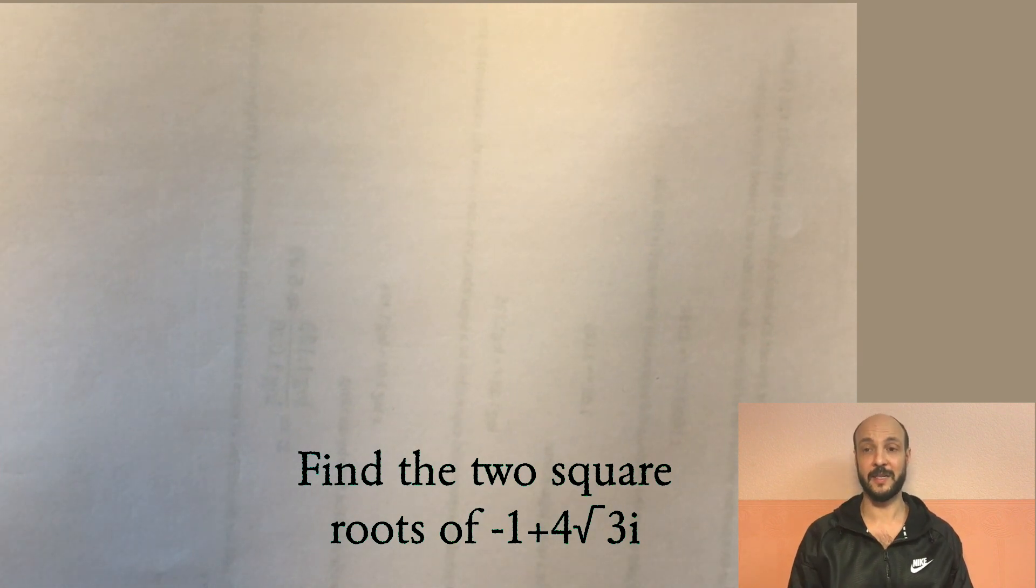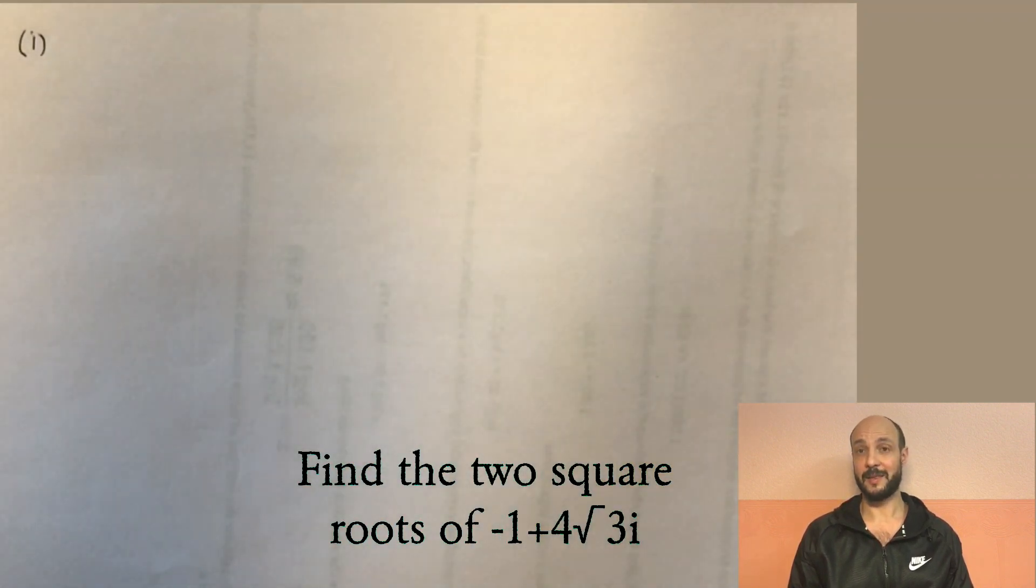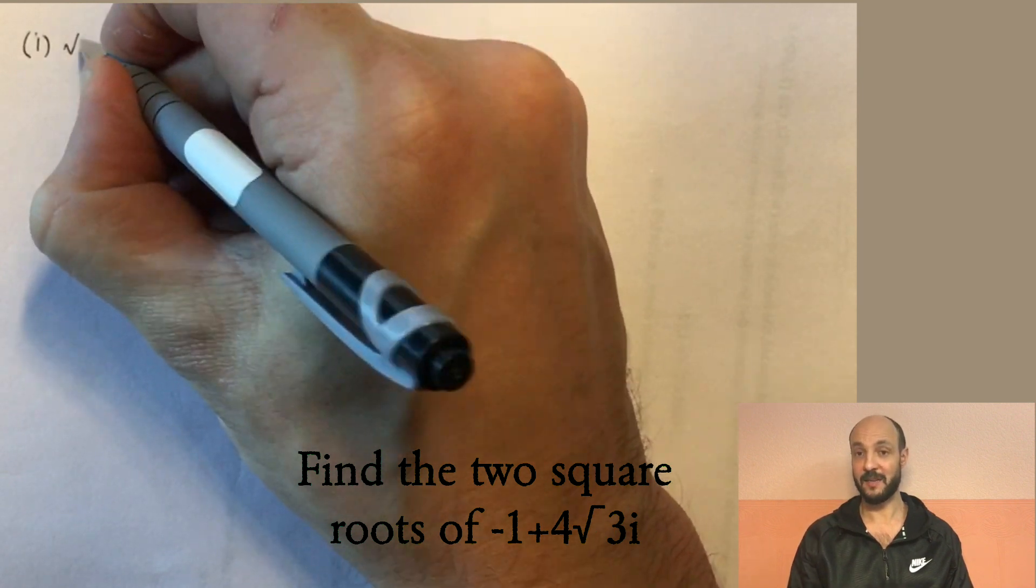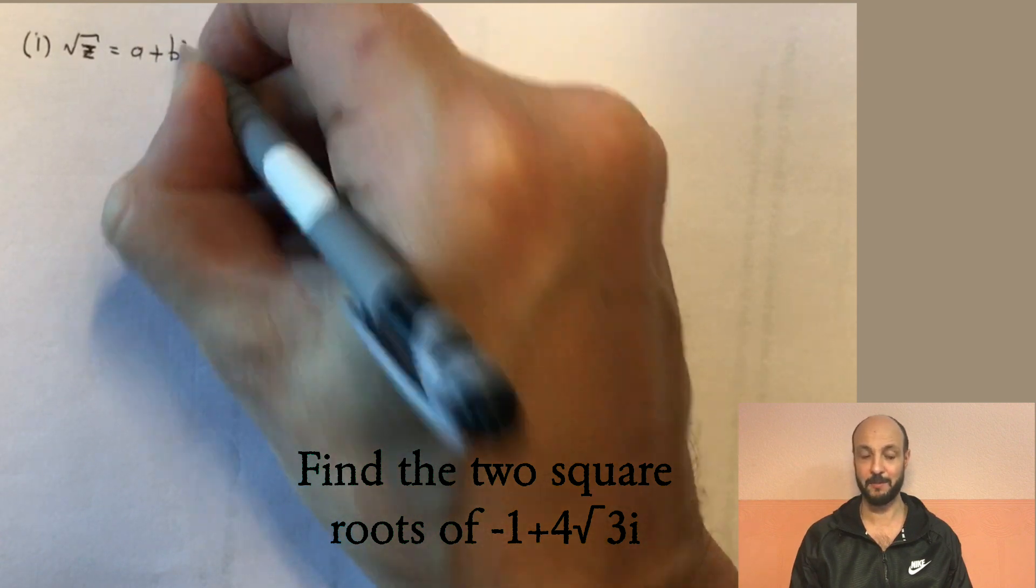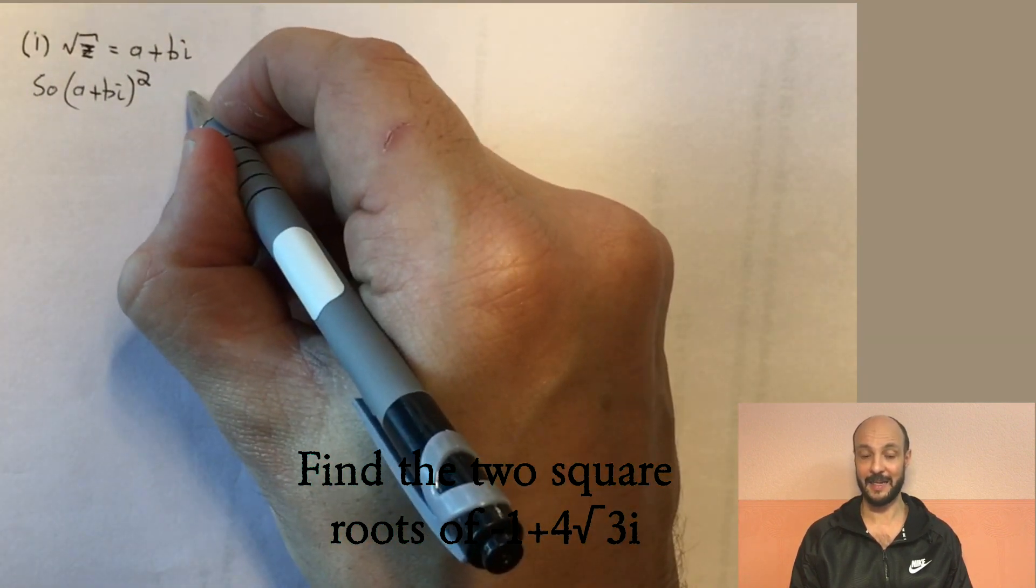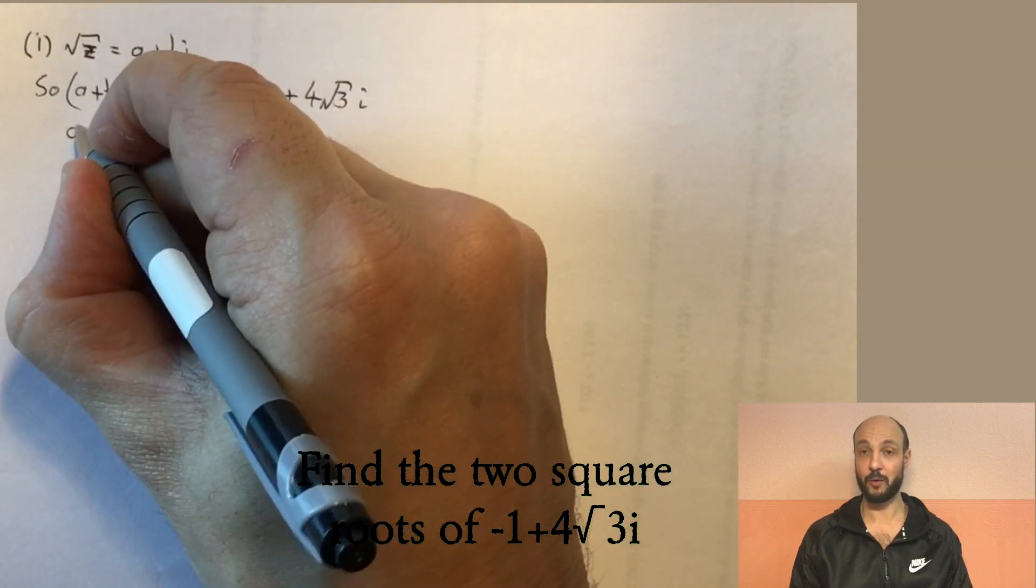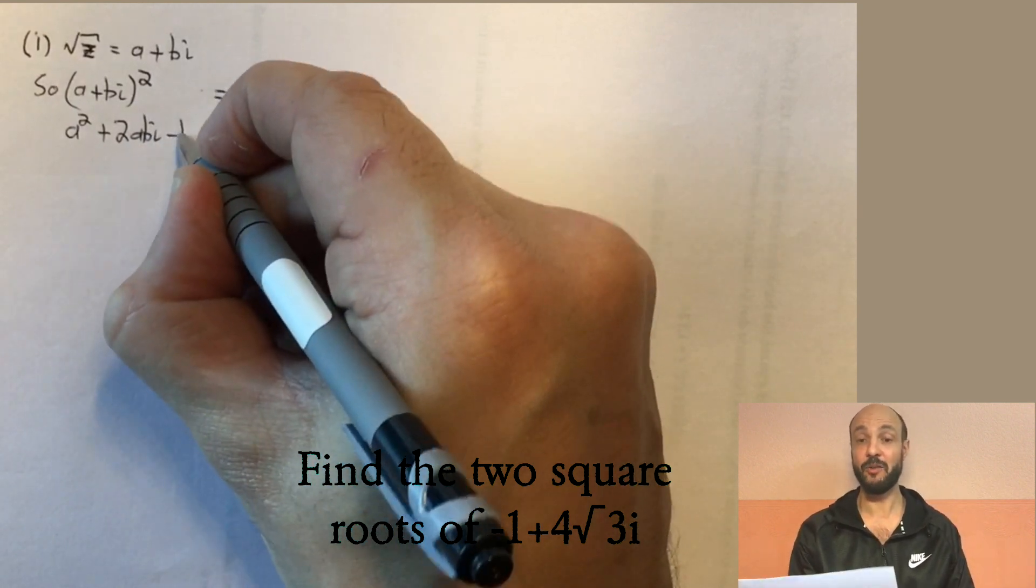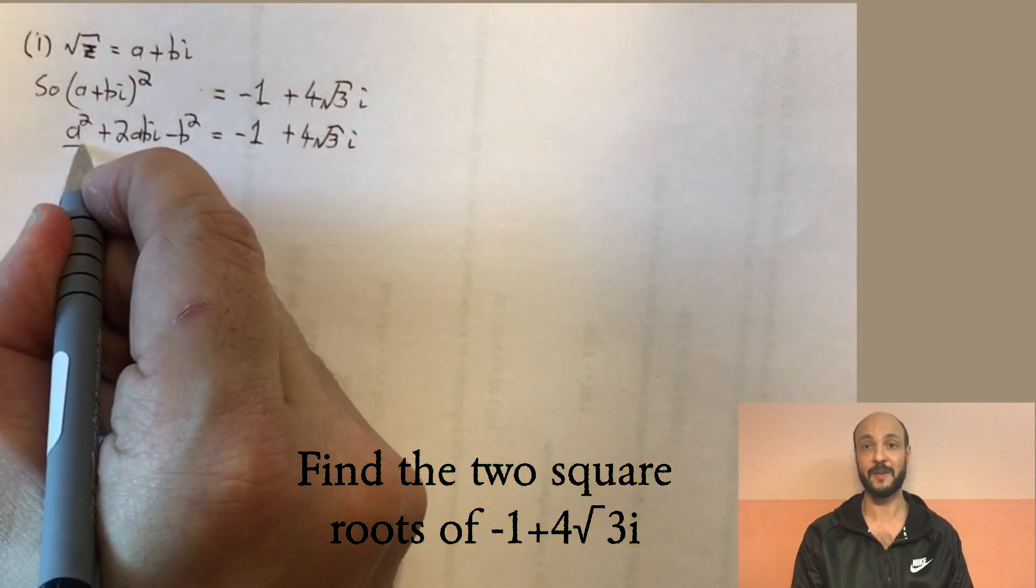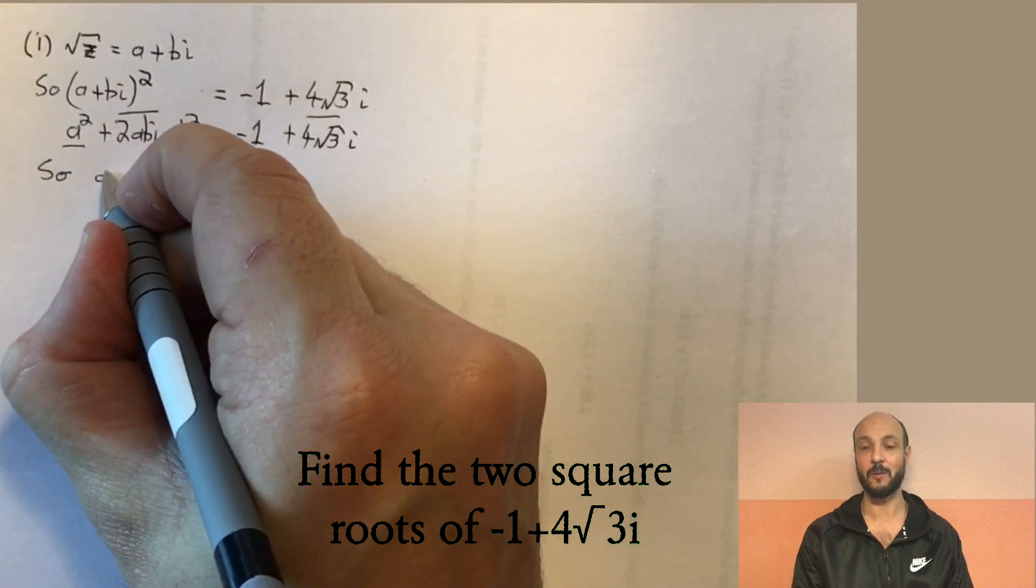So for our first question here, to find the square roots of a complex number, what we do is we write our square root with letters instead of numbers. So for instance, a plus bi. And we say a plus bi squared gives us the square that we've been given. So in our case, we have a plus bi all squared is minus one plus four root three times i. And then if we expand our a plus bi, we get a squared plus two ab i minus b squared equals minus one plus four root three i.